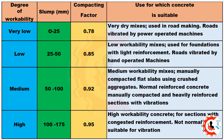Three: medium slump, 50–100 mm. Compacting factor = 0.92. Medium workability mixes. Suitable for manually compacted flat slabs using crushed aggregates, normal reinforced concrete manually compacted, and heavily reinforced sections with vibration.